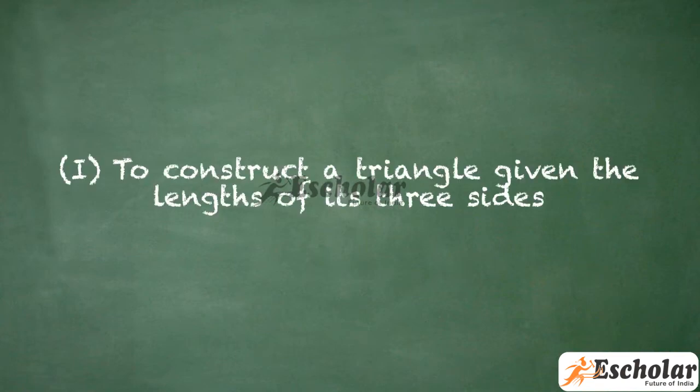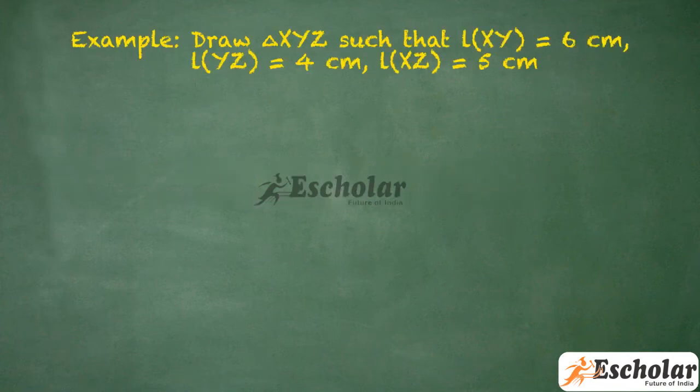First, to construct a triangle given the length of its three sides. For example, draw a triangle XYZ such that length of XY is equal to 6 cm, length of YZ is equal to 4 cm, length of XZ is equal to 5 cm.